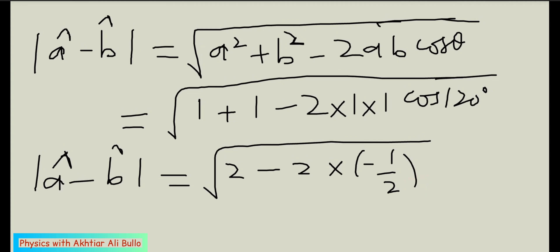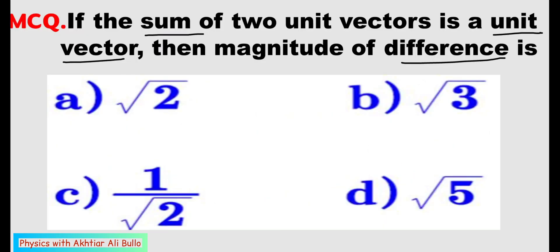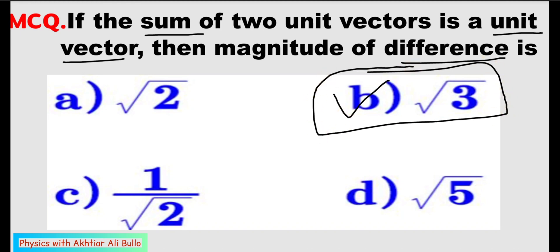Since minus times minus gives plus, the result is √(2 + 1) = √3. So the magnitude of the difference is √3, and the correct option is (b) √3. This means if the sum of two unit vectors is a unit vector, then the magnitude of their difference is √3.